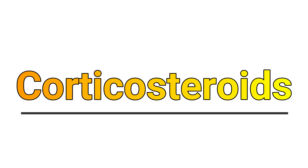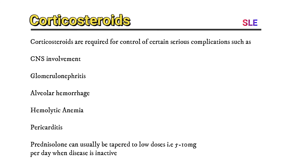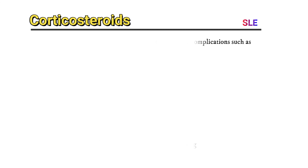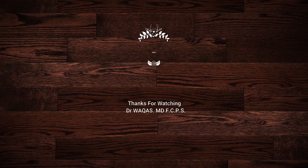Corticosteroids are required for control of certain serious complications such as CNS involvement, glomerulonephritis, alveolar hemorrhage, hemolytic anemia, and pericarditis. Prednisolone can usually be tapered to low doses, i.e. 5–10 mg per day when disease is inactive. Immunosuppressive agents such as cyclophosphamide and azathioprine are used in cases resistant to steroids. Like and subscribe our channel for further videos. Thank you!